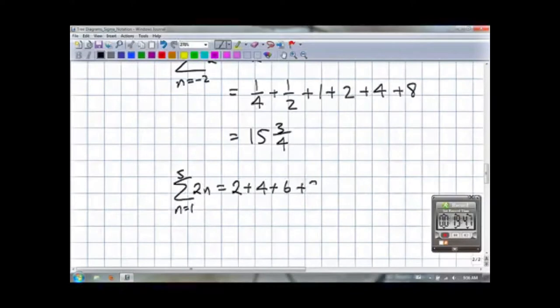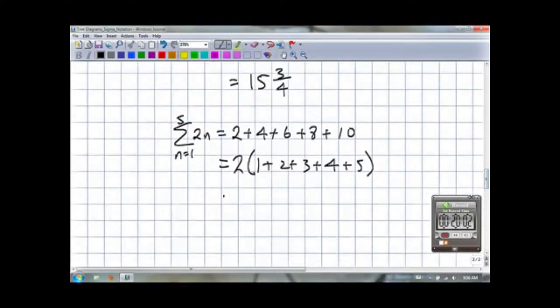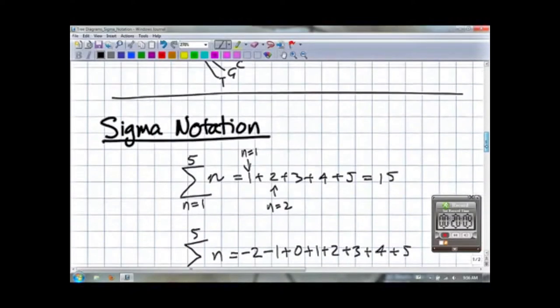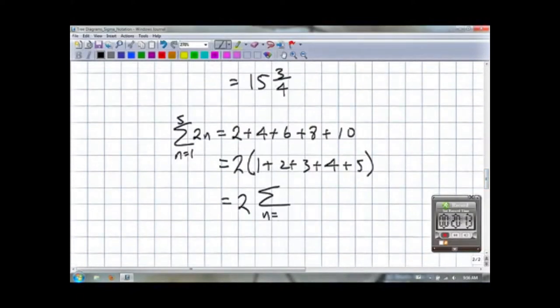Here we have the sum as i goes from 1 to 5 of 2 to the n. And notice this is a lot like taking 2 out of the summation and just summing up the numbers from 1 to 5 and then multiplying by 2 afterwards. And that means 2 is factorable outside of the sum.